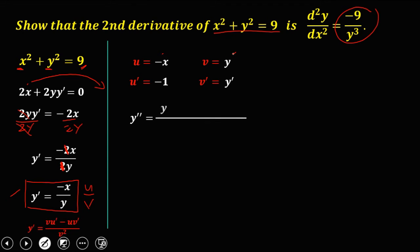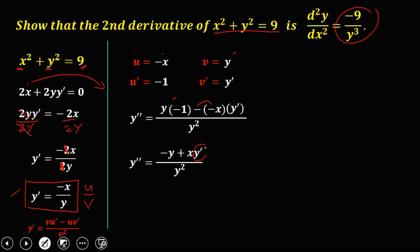Using the quotient rule formula: v times u' minus u times v' over v squared. That gives y times negative 1, minus negative x times y', all over y squared. Simplifying, y double prime equals negative y plus x·y' over y squared.